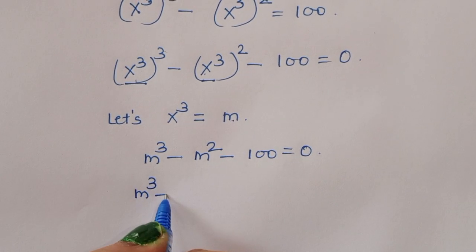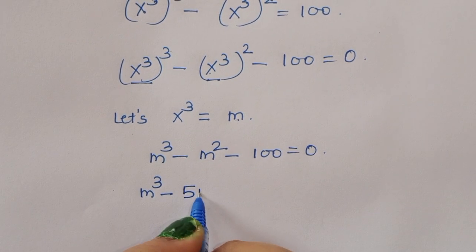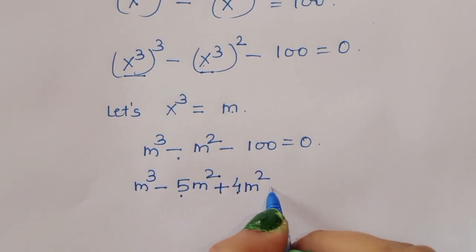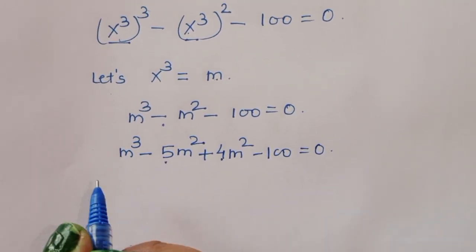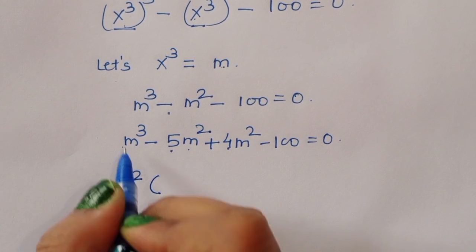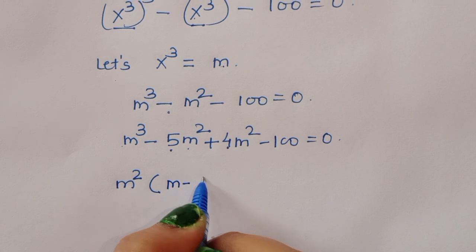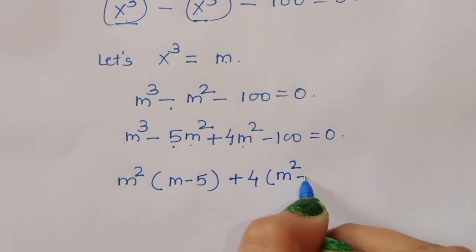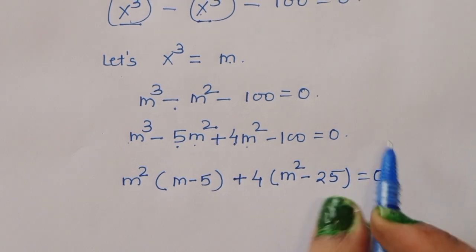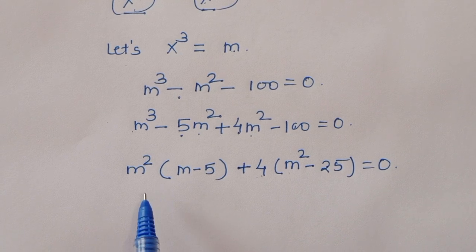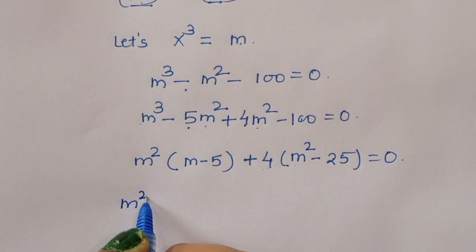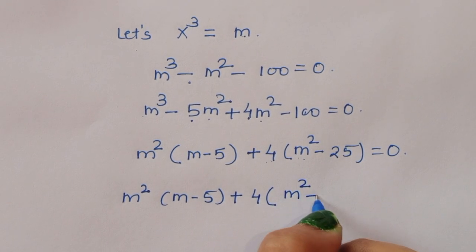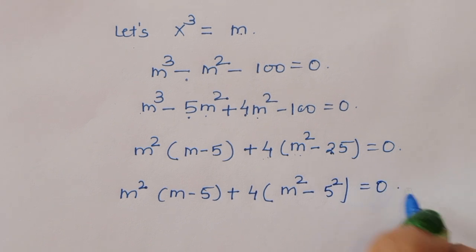Now for m cubed minus m squared, we can split this as minus 5m squared plus 4m squared, since negative 5 plus 4 equals negative 1. So we get minus 5m squared plus 4m squared minus 100 equals 0. Taking m squared common, we get m squared times m minus 5, plus 4 times m squared minus 25 equals 0.